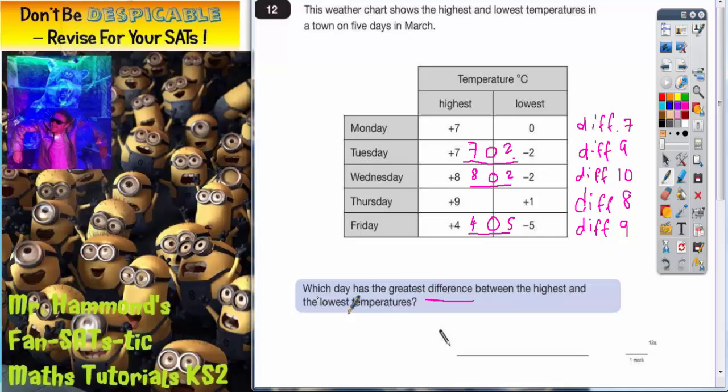Now then, it says which day has the greatest difference between the highest and lowest temperatures. Well we've got the differences here and the greatest difference is this one, difference of ten. That's bigger than any of the other differences and that one goes with Wednesday. So the first answer is Wednesday.